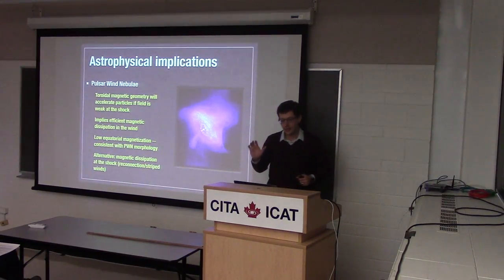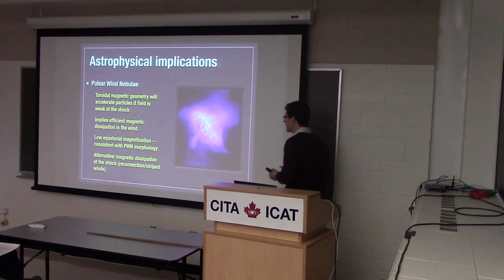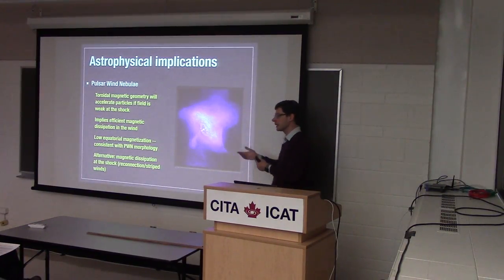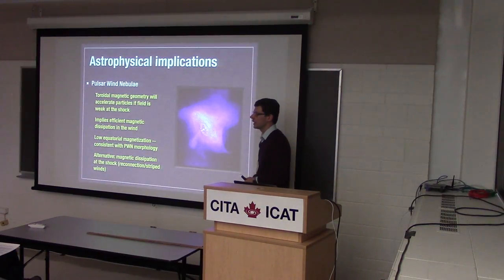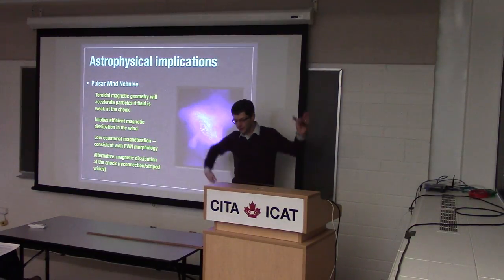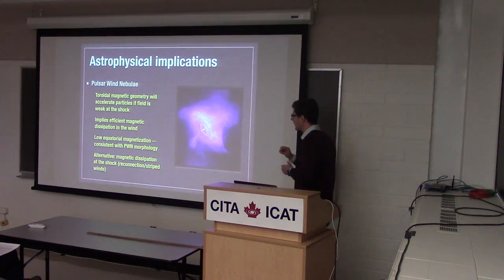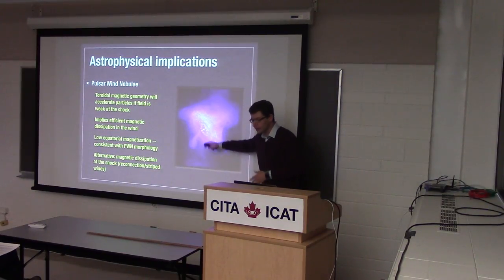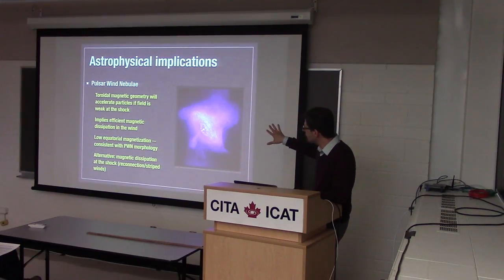The good news is that there is the magnetization parameter to play with. If magnetization is lower than some threshold, even quasi-perpendicular shocks will be mediated by Weibull-type instabilities. In the equatorial region of a pulsar wind, where the wind has striped alternating-direction magnetic field, magnetization can become low because the field can reconnect at or before the shock — that's probably where acceleration can still happen.